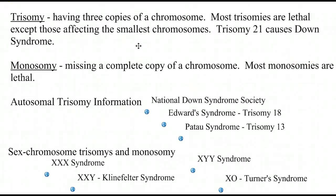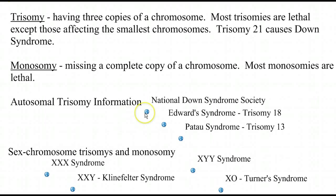You can also have monosomies in which case the organism is actually missing a whole chromosome. These are almost always lethal with a couple of exceptions. If you're interested in some of these trisomies, I've got some links — you'll have to look at the smartboard notes on the website. There you get the Down Syndrome Society, Edwards syndrome which is trisomy 18, and trisomy 13, which I'm not going to try to pronounce.